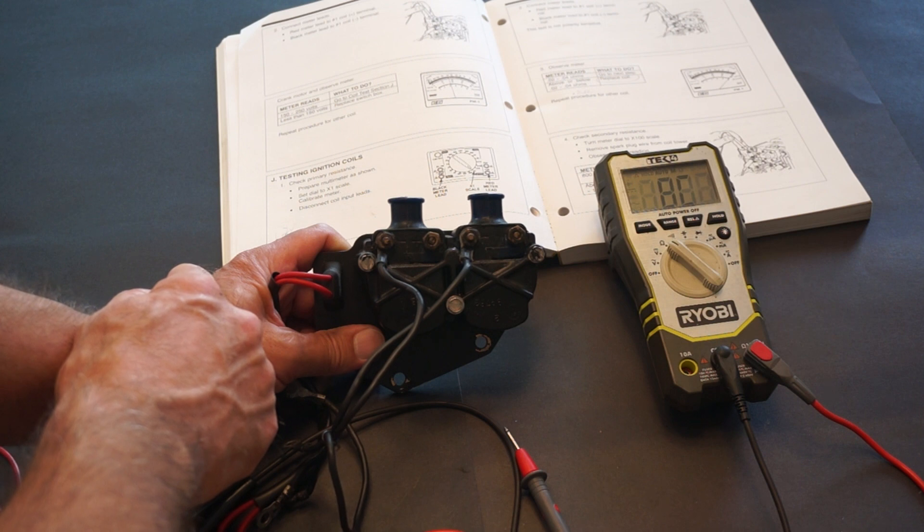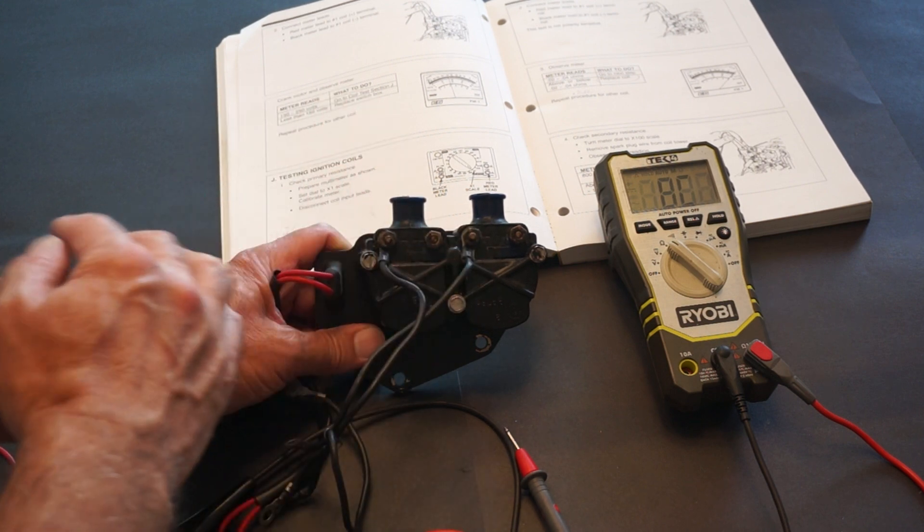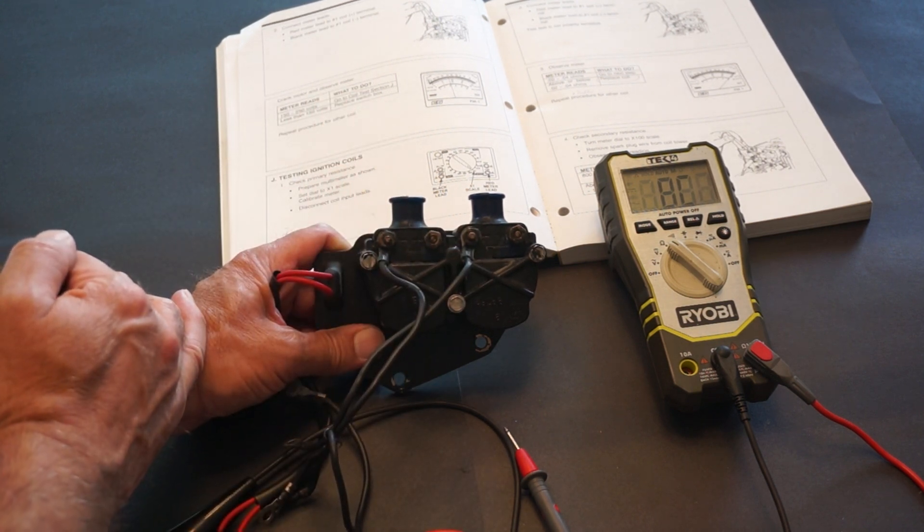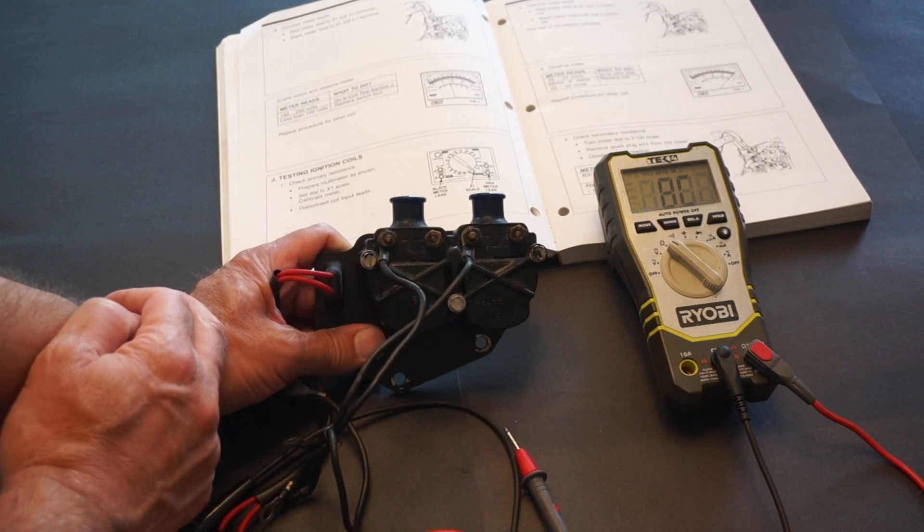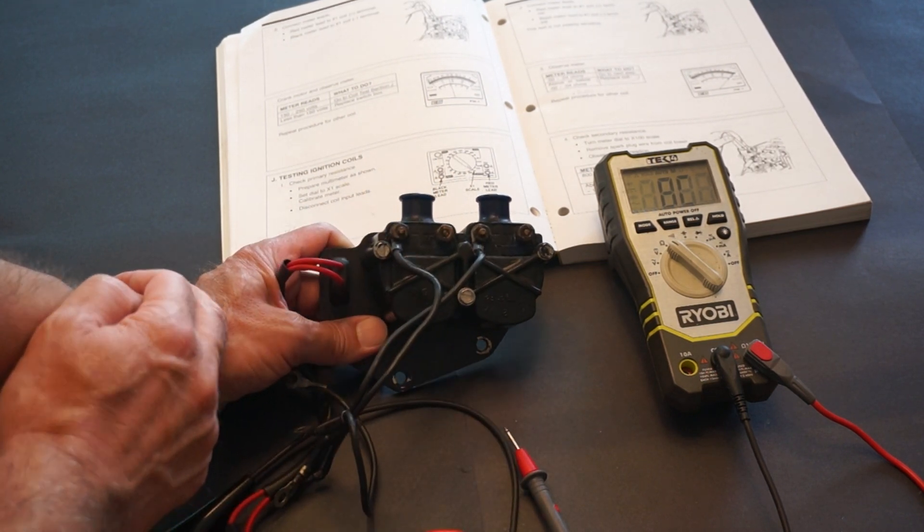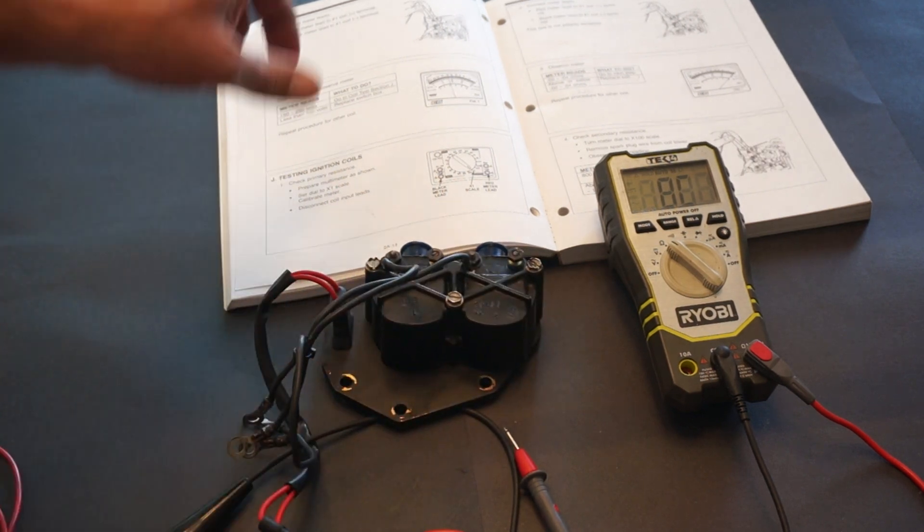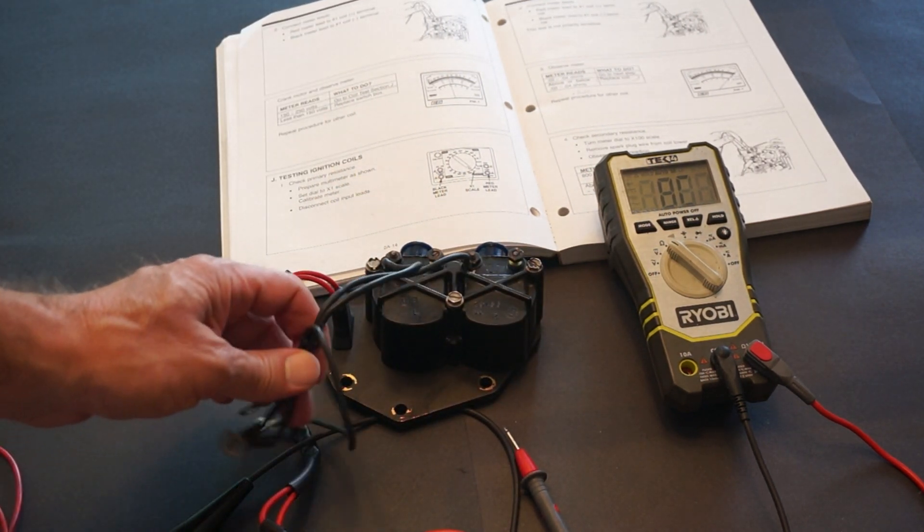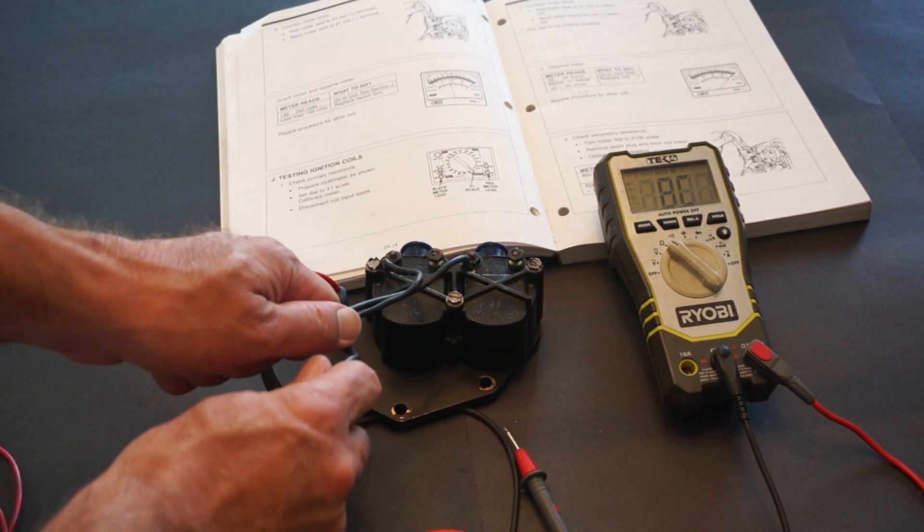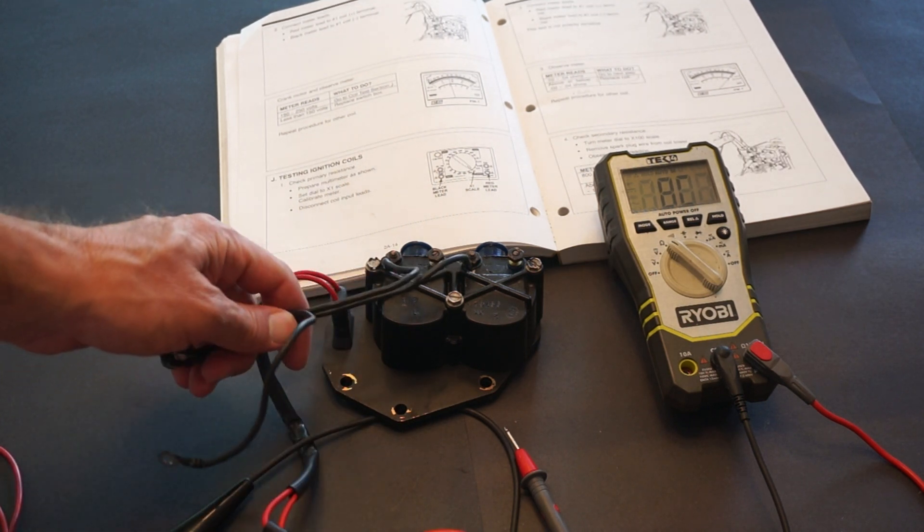So with this, we're going to check two different resistances. There are two coils here, they both should be the same. So the primary, according to the book, should be about 0.02 to 0.04.